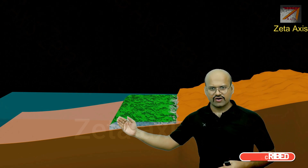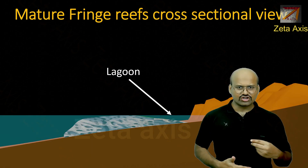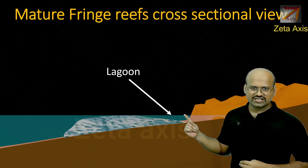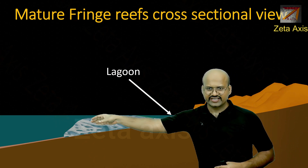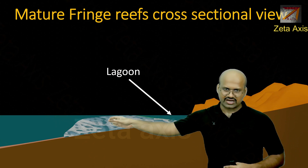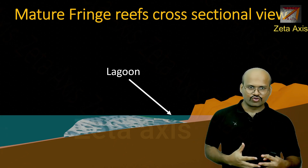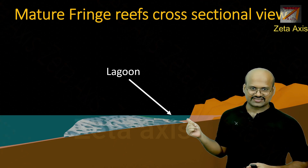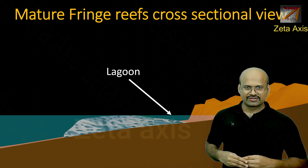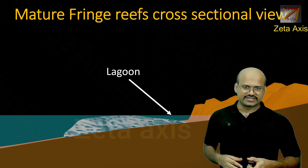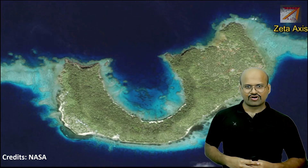Over time, the fringe reef develops and corals move further away from the coastline. In the cross-section, we can now see a lagoon, with most corals concentrated in the region away from the coastline. As we approach the coast, coral concentration decreases, and there is a small lagoon of no more than three to five meters depth.